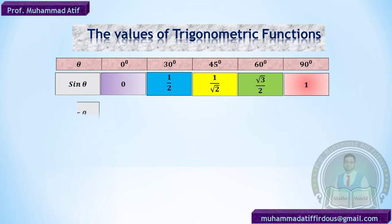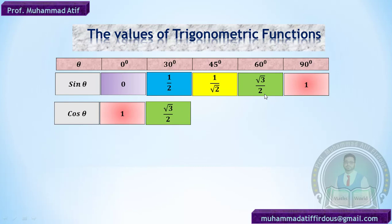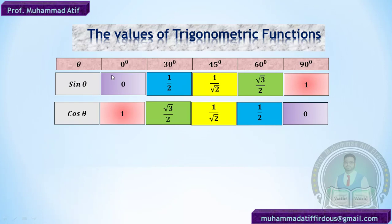To find cosine values, just reverse the sine values. So cos 0° = 1, cos 30° = √3/2, cos 45° = 1/√2, cos 60° = 1/2, and cos 90° = 0. It's simply the reverse of all the sine values.